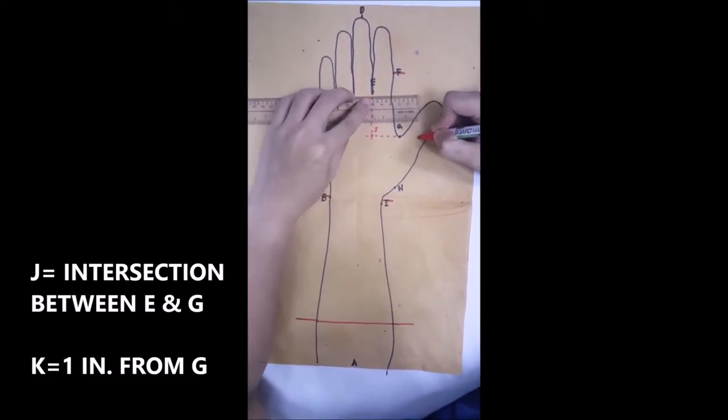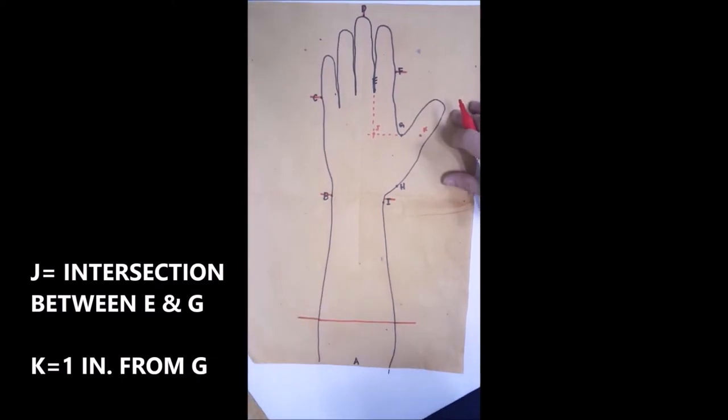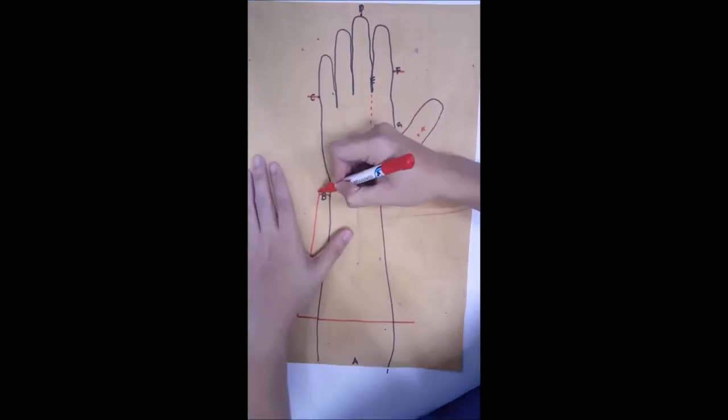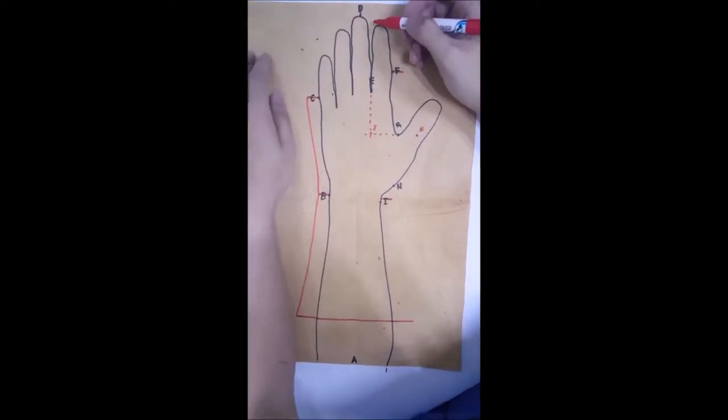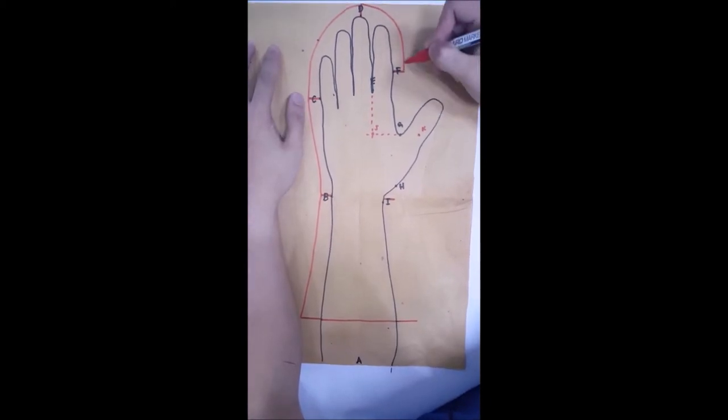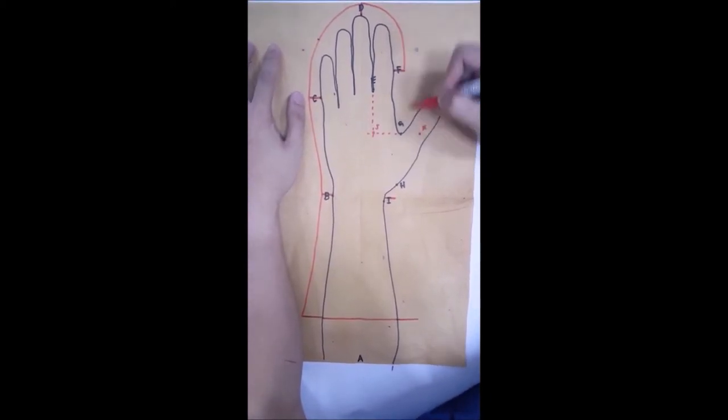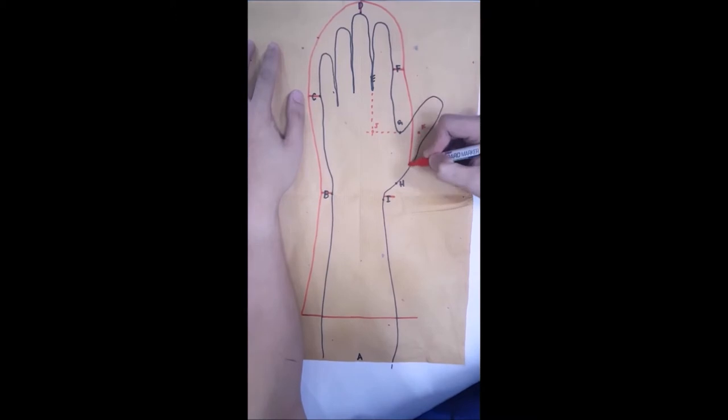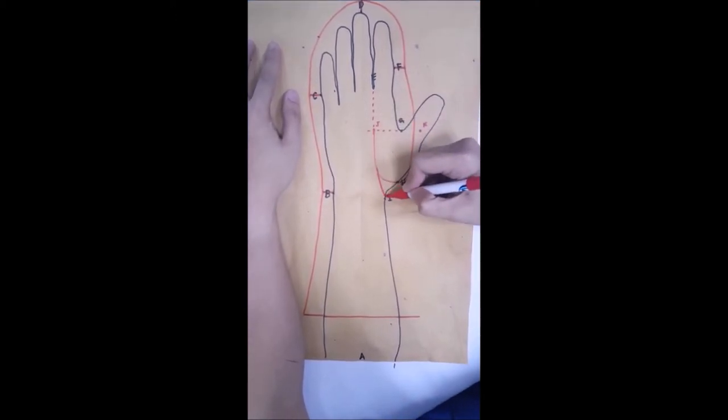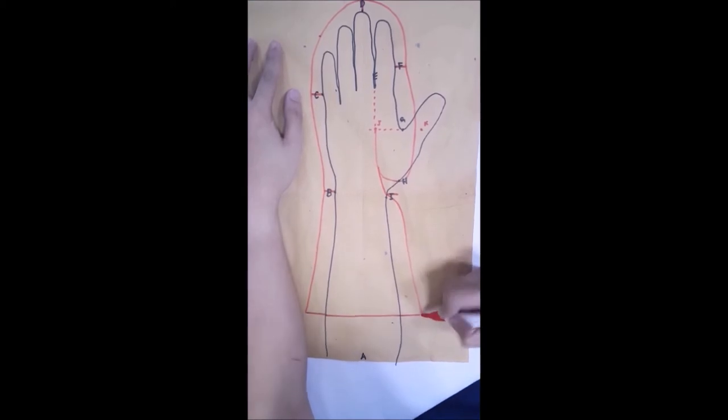Then mark K one-inch from the radial side of G. Connect the line from the forearm to B, C, D, F between G and K, curve going to H, vertical line to J, and connect I at the line of the two-thirds of forearm.